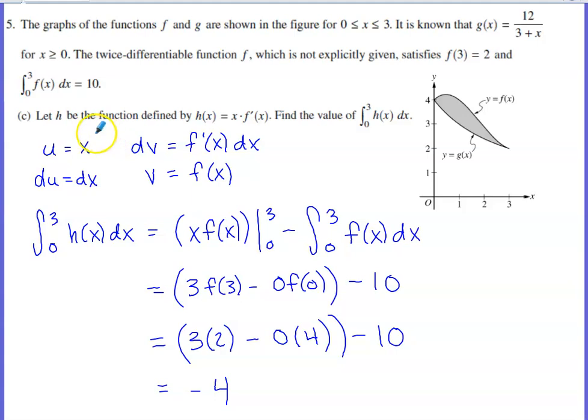The last part defines a new function h, given by x times f prime of x. We're asked to find the value of the integral of h of x from 0 to 3. This is clearly a product. You could consider a u substitution, but there's not any way to get that to work successfully. In Calc BC, integration by parts allows us to integrate products.